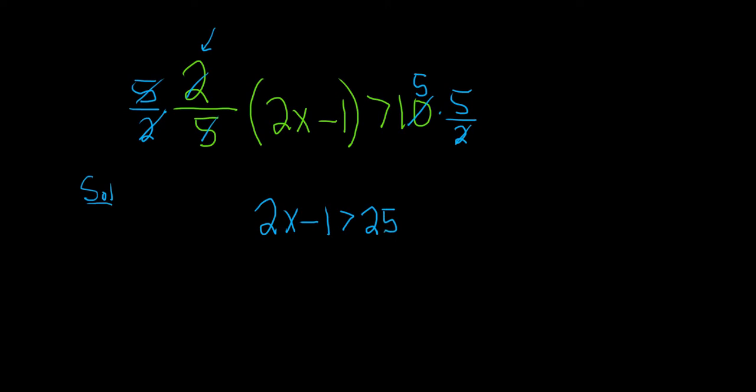So now that we've freed it from the parentheses, we can add 1 to both sides. Again, the goal is to isolate the x. So we have 2x greater than 26.